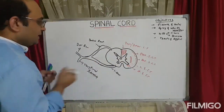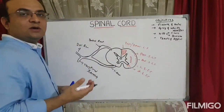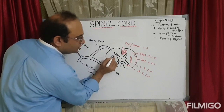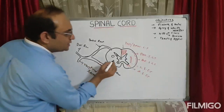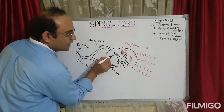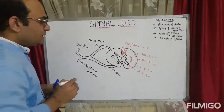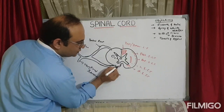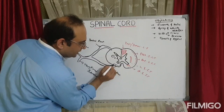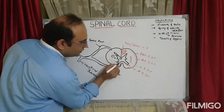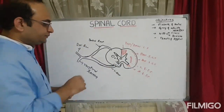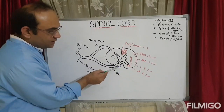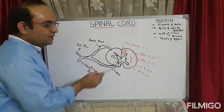The descending fibers are motor or efferent fibers. The most important is the corticospinal tract, specifically the lateral corticospinal tract in the lateral column, with the rubrospinal tract just anterior to it. You also have the anterior corticospinal tract, the tectospinal tract, the vestibulospinal tract, and the medial and lateral reticulospinal tracts.